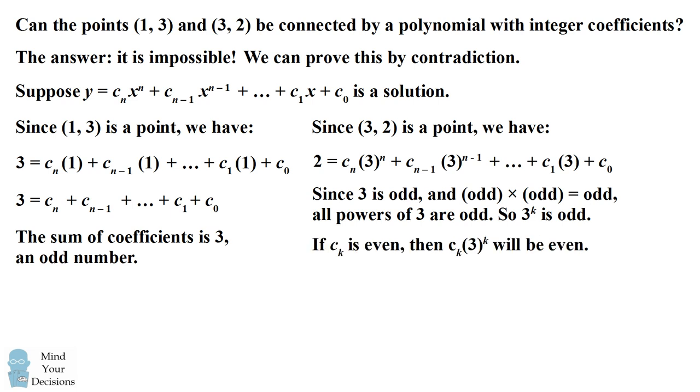Furthermore, if the coefficient in a particular power is even, then that coefficient times 3^k will be an even number. This is because an even number times any number will be an even number. If on the other hand the coefficient is odd, then the coefficient multiplied by 3 to some power will also be an odd number, because an odd number times another odd number is an odd number.